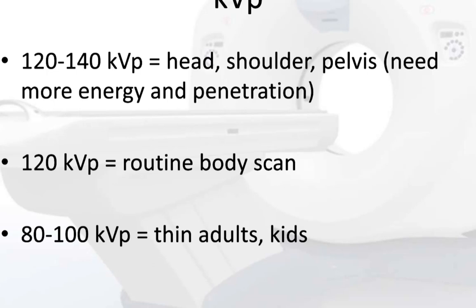When we scan with CT, the KVP will be fairly constant. For example, for the head, shoulders, or pelvis — body parts that have bone — they will need higher KVP to penetrate those dense structures, so KVP will be 120 to 140. Our routine abdomen and pelvis scan will be 120 KVP, and smaller or thin adults or children might have a lower KVP of 80 to 100.